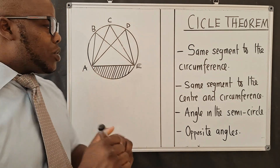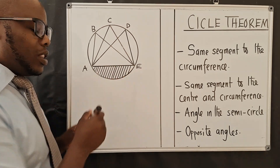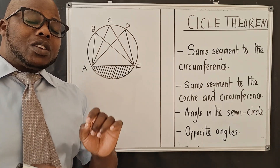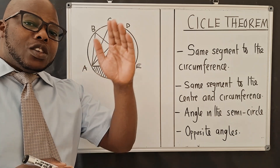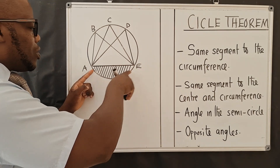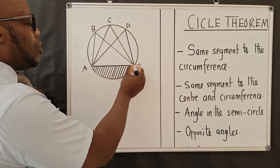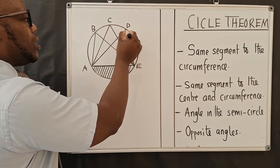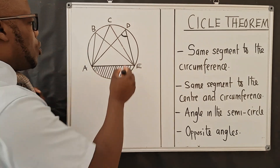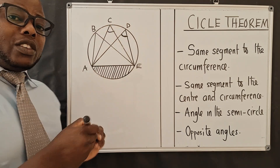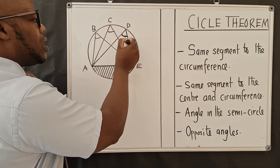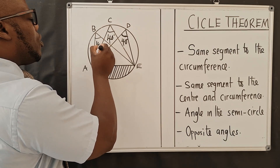Let me help you understand. We talked about the segment in lesson number one, so please click the link in the description to go to lesson number one if you haven't watched it. From here all the way, there is an angle at D. The angle at D will be equal to the angle at C because they are coming from the same segment. The same applies to the angle at B — all these will be equal. If this is 40 degrees, this is also 40 degrees.